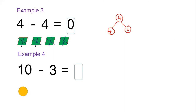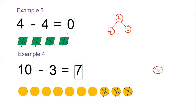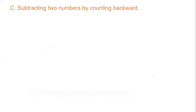Ten minus three — we have ten pictures: one, two, three, four, five, six, seven, eight, nine, and ten. Now we cross out three: one, two, three. Our answer — let's count: one, two, three, four, five, six, and seven — our answer is seven. So we have ten as the whole, one part is three, the other part is seven.